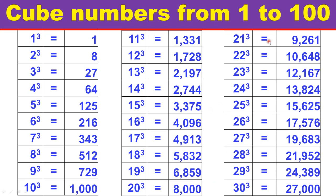21 cube equals 9261. 22 cube equals 10648. 23 cube equals 12167. 24 cube equals 13824.